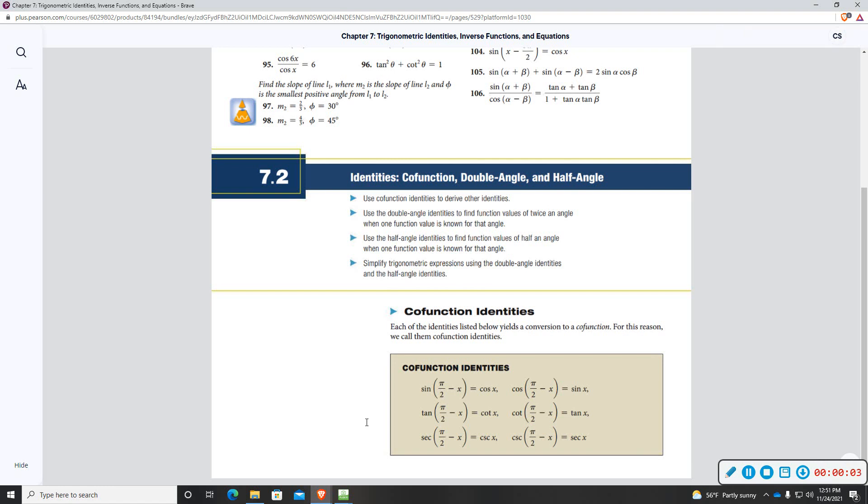Today we're going to be looking at section 7.2: co-functions, double angle, and half angle identities.